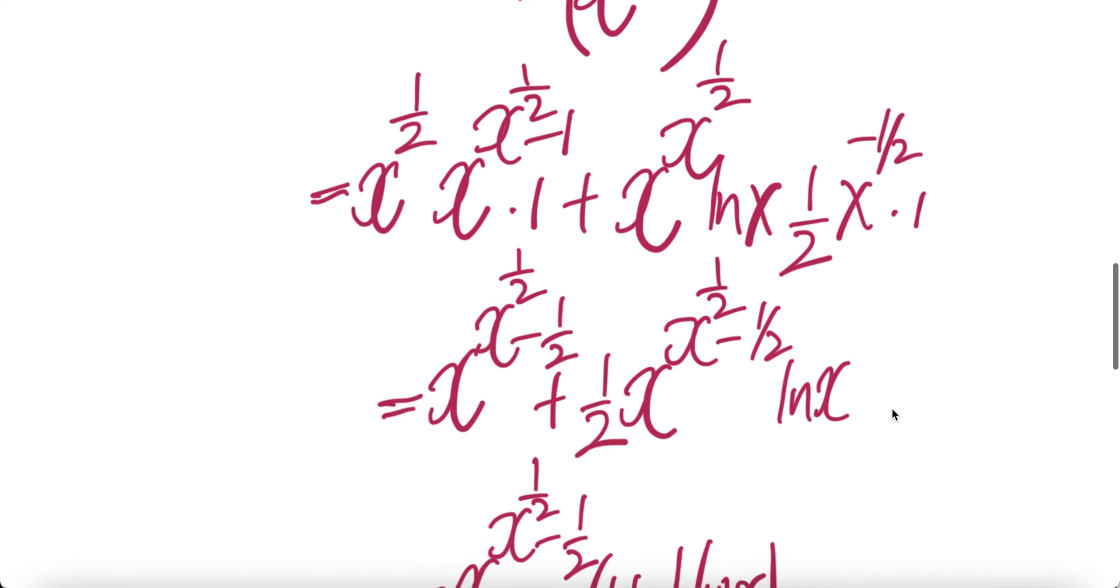Derivative of x is one. Now let's combine terms, and then here we get half and minus half, we get minus half here.